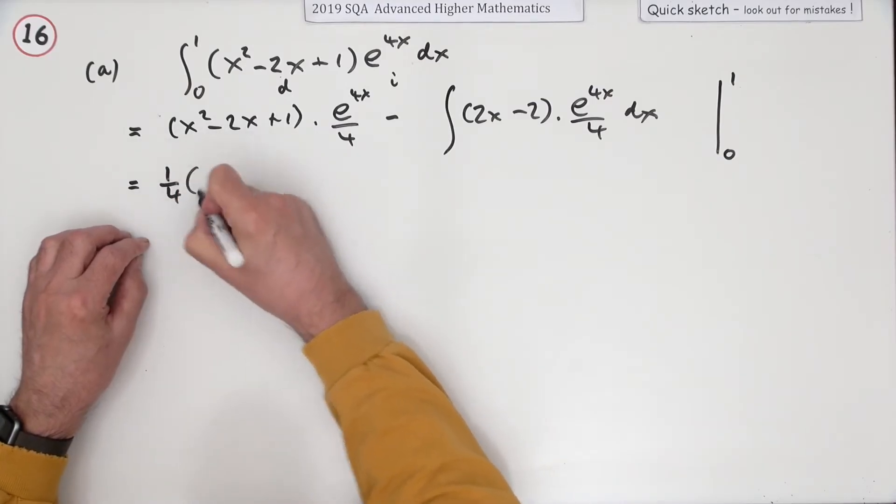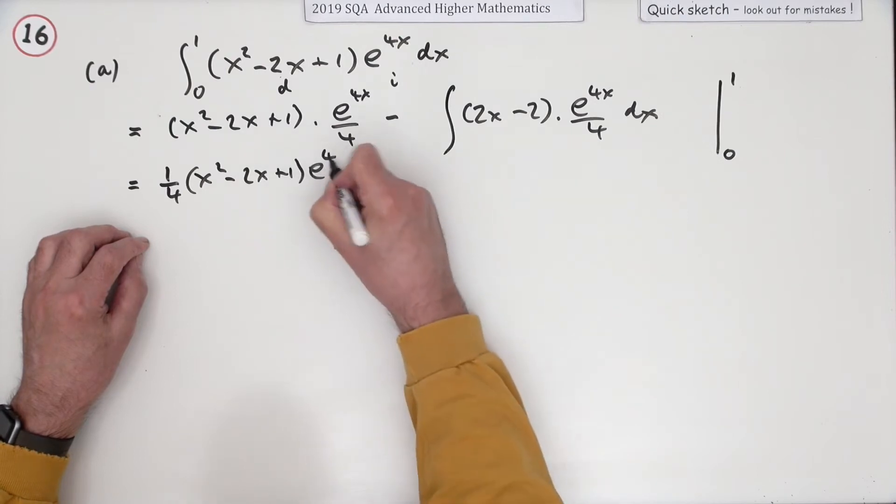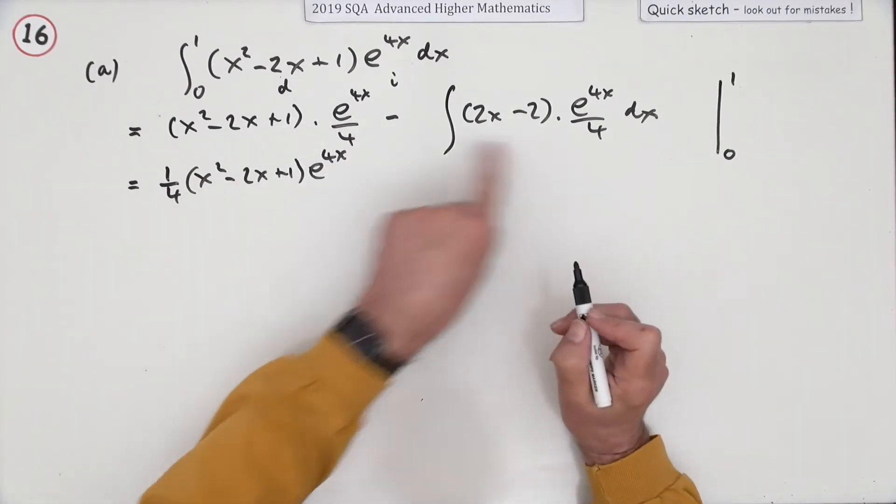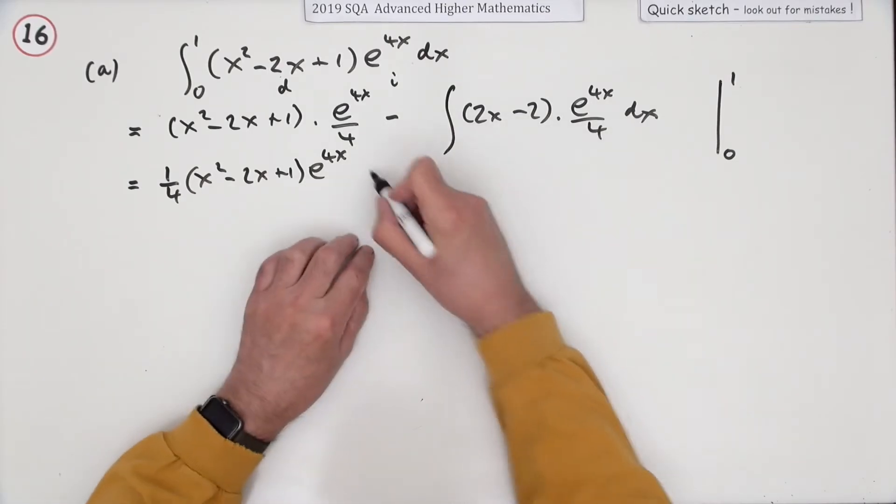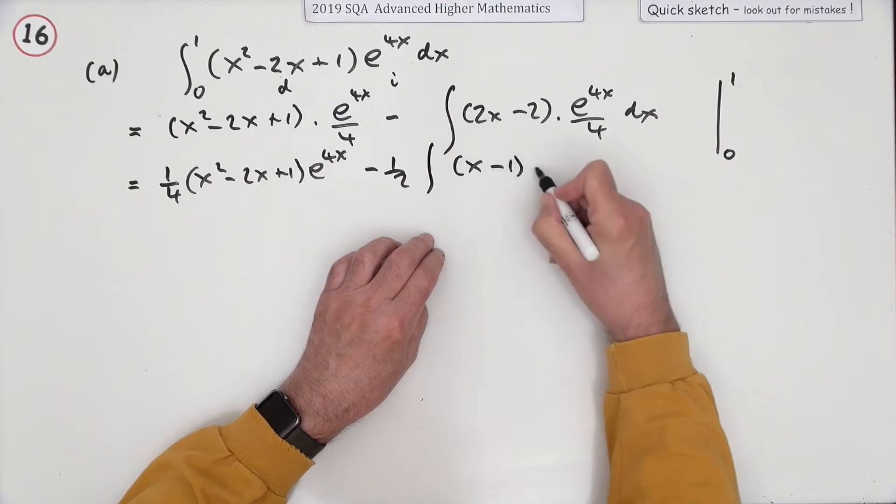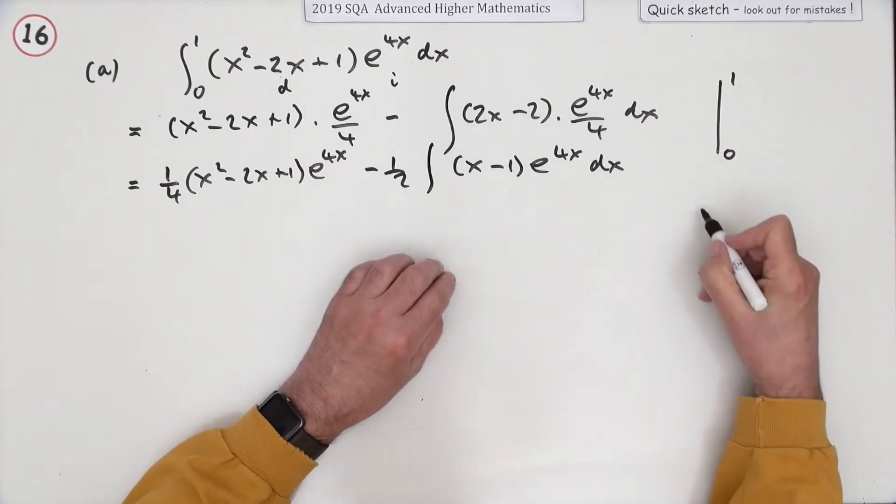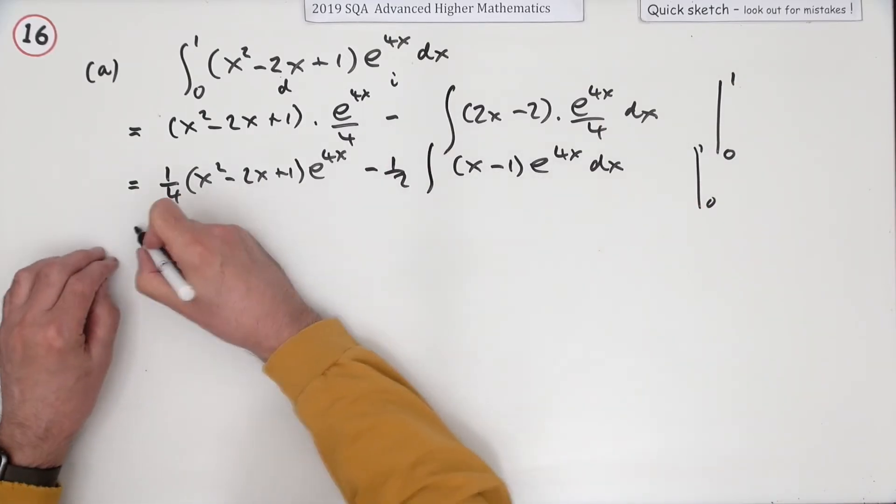Now I can tidy this bit up. So I've got a quarter of x squared minus 2x plus 1 e to the 4x, because I'll not be touching that again. But I think I'll tidy this up before I go any further. You can take out 2 and I can take out 4 and make that minus a half of the integral of just x minus 1 e to the 4x dx. Get well rated from 0 to 1. Real nuisance.